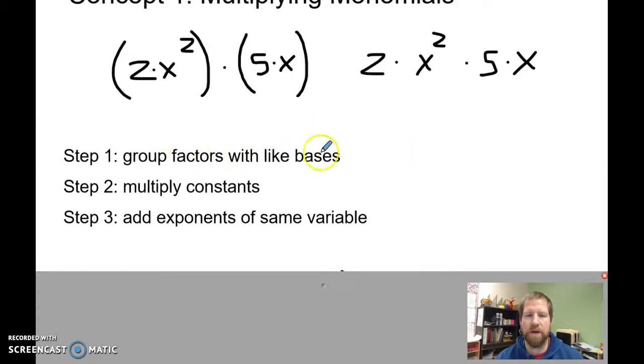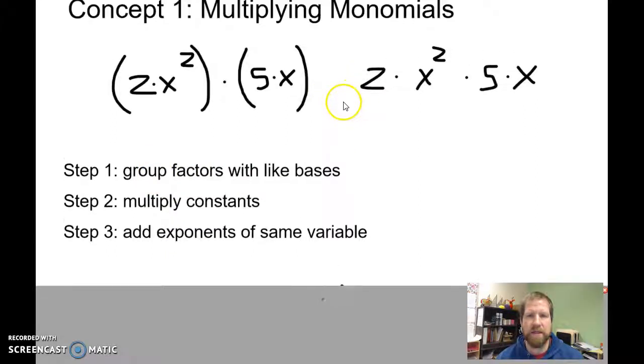Our first step is going to be grouping factors with like bases. So this is kind of the same as getting like terms together. I'm going to identify that this is a constant, this is a constant. And then both of these have x as their variable, as their base.